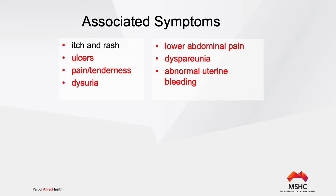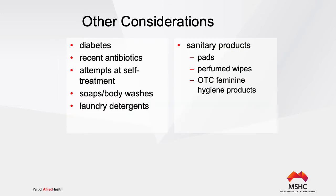Is there abnormal vaginal bleeding? When was your last menstrual period? Is it associated with intermenstrual bleeding or post-coital bleeding? Do you have any blood-stained discharge? Other considerations: do you have a history of comorbidities like diabetes? Have you taken any antibiotics recently? Have you tried to treat this discharge on your own, for example with over-the-counter or herbal medications?